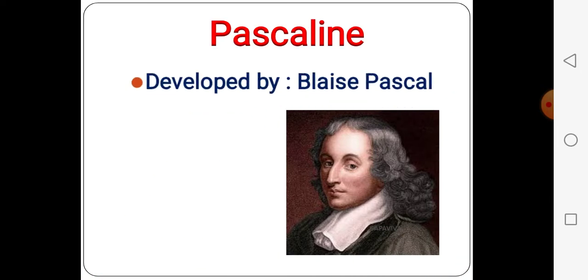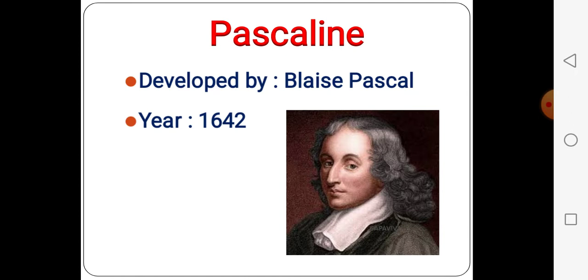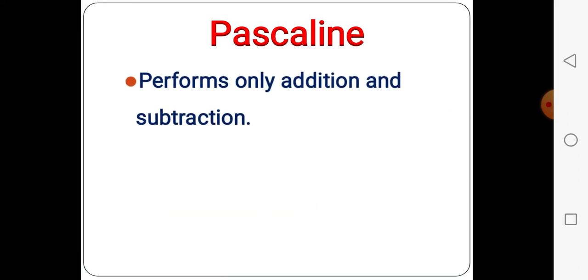The next one is the Pascaline. The Pascaline is developed by Blaise Pascal in the year 1642. This Pascaline performed only addition and subtraction. So first of all, the Abacus performs four operations — addition, subtraction, multiplication and division. Then John Napier invented Napier's bones which does only multiplication and division. And now this Pascaline invented by Blaise Pascal does only addition and subtraction.